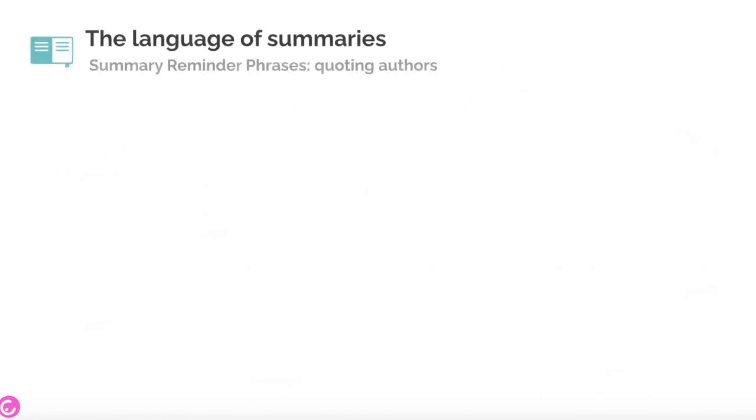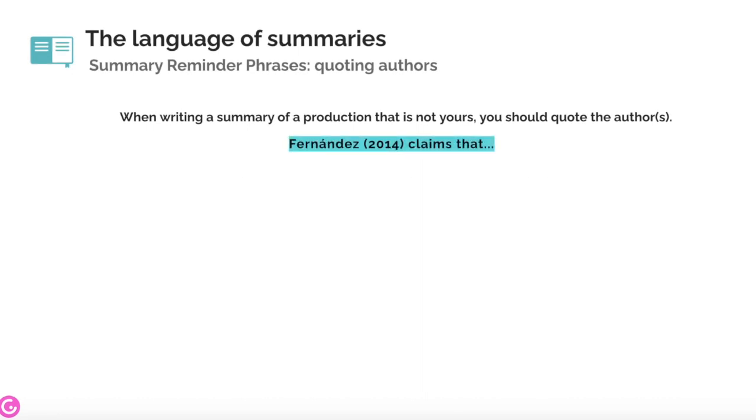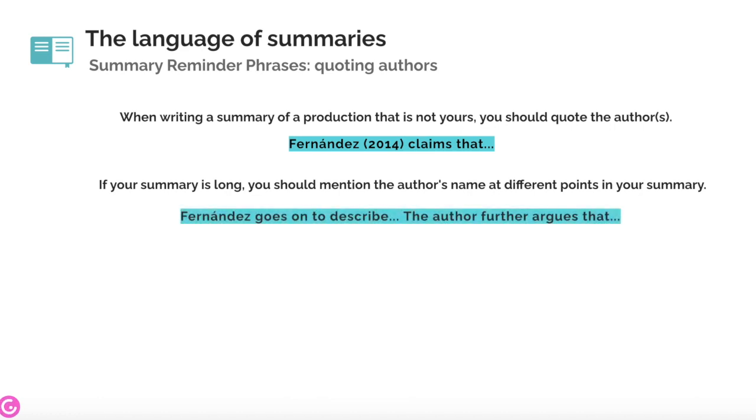When writing a summary of a production that is not yours, you should quote the authors. To do so, one possibility is writing their last name followed by the year of publication of the source in brackets. After the brackets, you should add a reporting verb and the idea you want to convey. For example, Fernandez claims that...